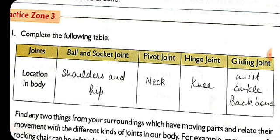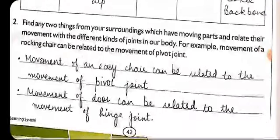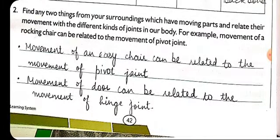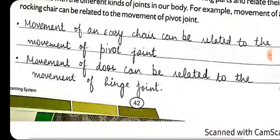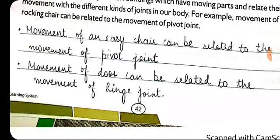The gliding joint allows gliding movement. The next question asks you to find two things from your surroundings that move similarly to our joints. For example, the movement of a swivel chair can be related to the pivot joint, as it rotates. The movement of a door can be related to the hinge joint, as a door opens in only one direction.